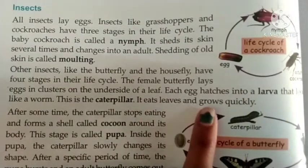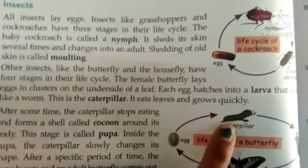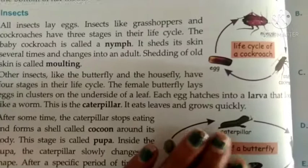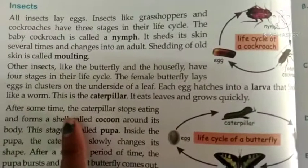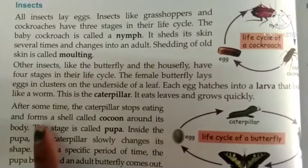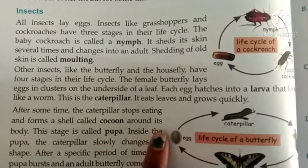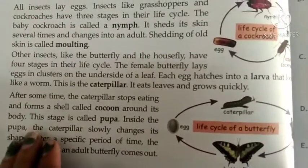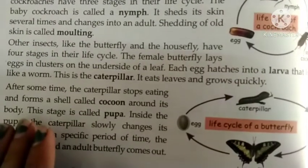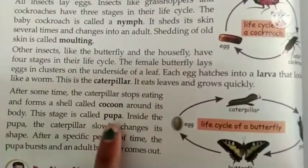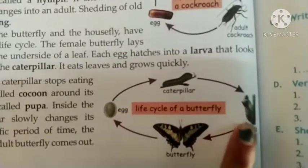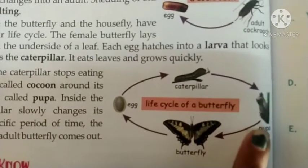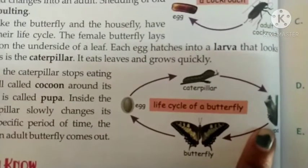The caterpillar eats leaves and grows quickly. After some time, the caterpillar stops eating and forms a shell called a cocoon around its body. This stage is called the pupa. The caterpillar eats leaves, then its entire body gets covered by the shell — this is the pupa stage.